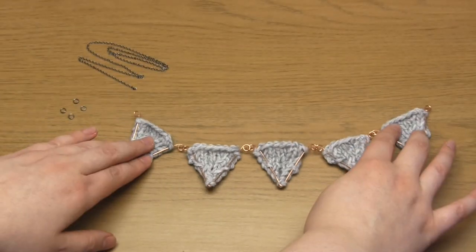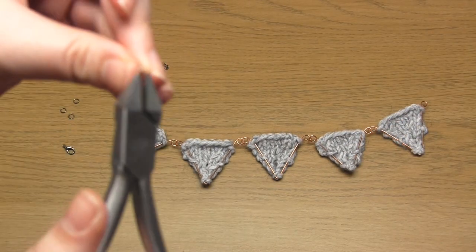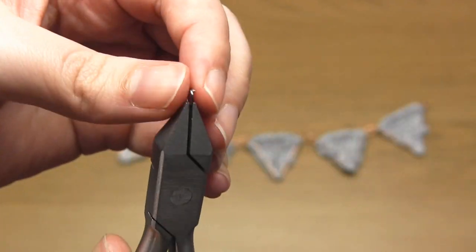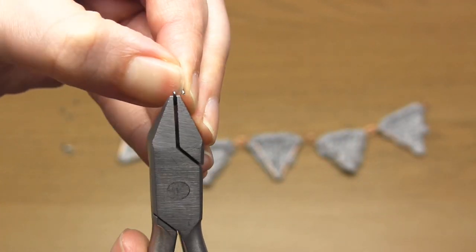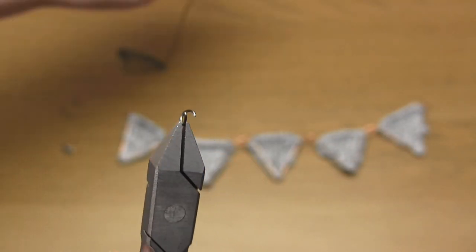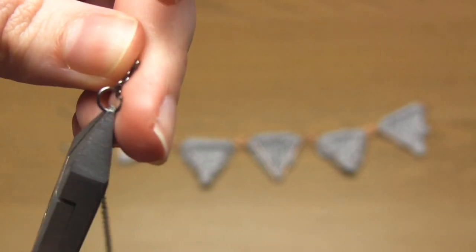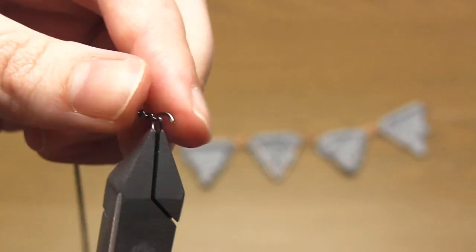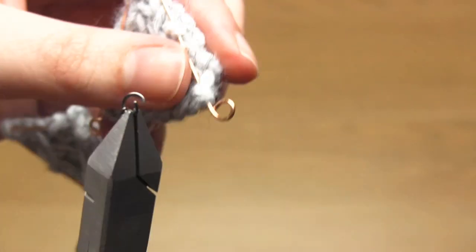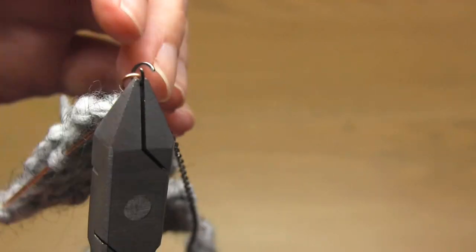Next use your jewelry pliers to attach the jump ring and the length of chain to each end of the triangles. If you're wondering how long to make the necklace, 16 inches is a popular choice, but it's completely up to you.